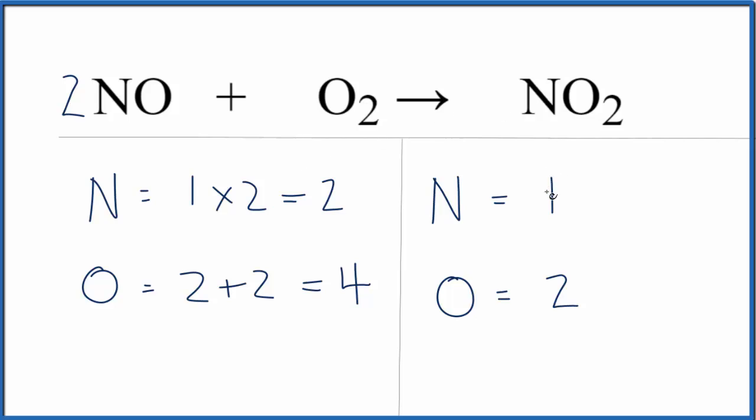Over on the product side let's just put a 2 in front of the NO2 because that'll fix the N and it might fix the oxygens as well. So I have 1 times 2. That gives me 2. My nitrogens are balanced and 2 times 2 for the oxygens. That gives me 4.